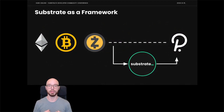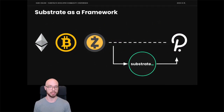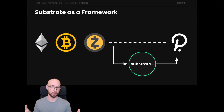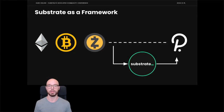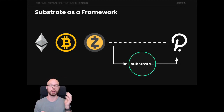Parity, as a company, started working on blockchain technology over five years ago. We started by building an Ethereum client that at one point was used by more than 80% of miners on the Ethereum network. Then we built a Bitcoin client, then a Zcash client together with the Zcash Foundation. And as we set out to build Polkadot — our big bet on what third-gen blockchain is going to be — we realized we were doing the same things over and over again.